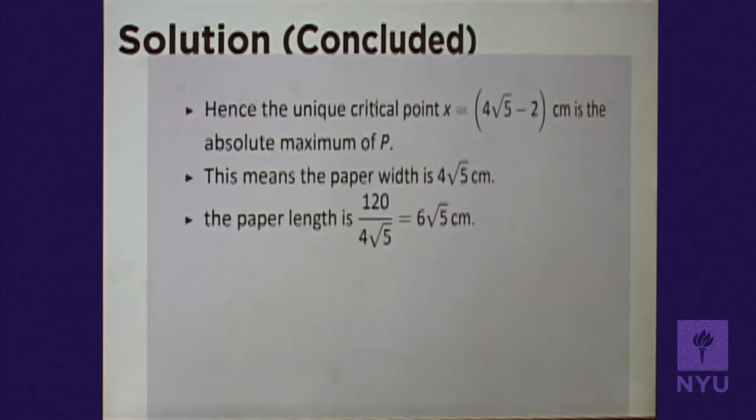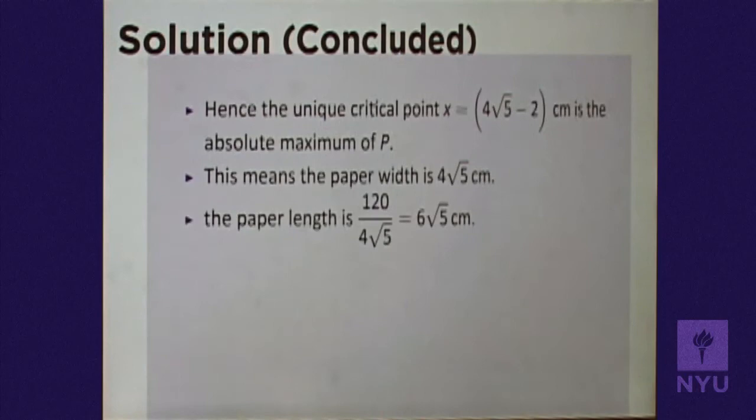The maximum printed area occurs when x = 4√5 − 2. Using the constraint equation, the other dimension is y = 6√5. Those are the optimal dimensions of the advertisement.